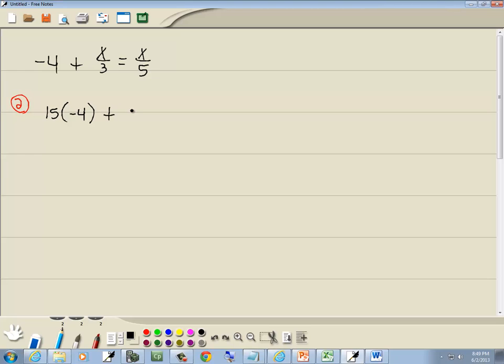So multiply it times negative 4, multiply it times the x over 3, and multiply it times the x over 5. When I say everything, I'm talking about what's separated by pluses, minuses, and equals.